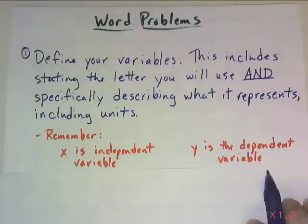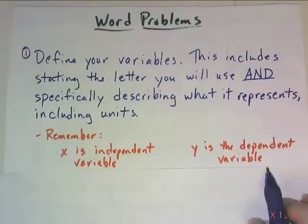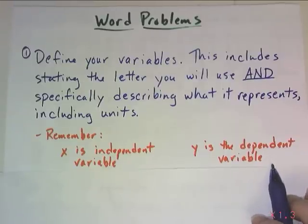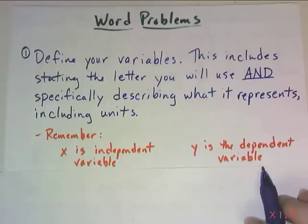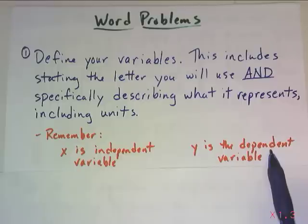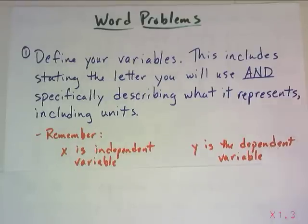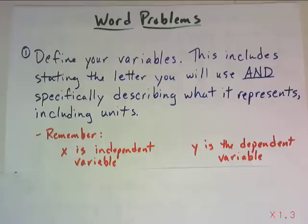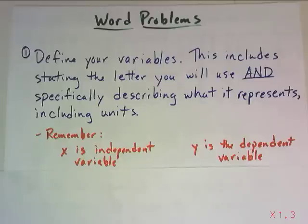As far as your dependent variable, sometimes it's easiest to start by figuring out which one is the dependent variable — which variable depends on knowing the other value? That's going to be your dependent variable. Sometimes it's easier to decide this one first by stating the relationship both ways. Does time depend on distance, or does distance depend on time? Once you figure that out, make that your dependent variable and go from there.